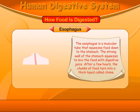Oesophagus. The oesophagus is a muscular tube that squeezes food down to the stomach. The strong wall of the stomach squeezes to mix the food with digestive juice. After a few hours, the chunks of food turn into a thick liquid called chyme.